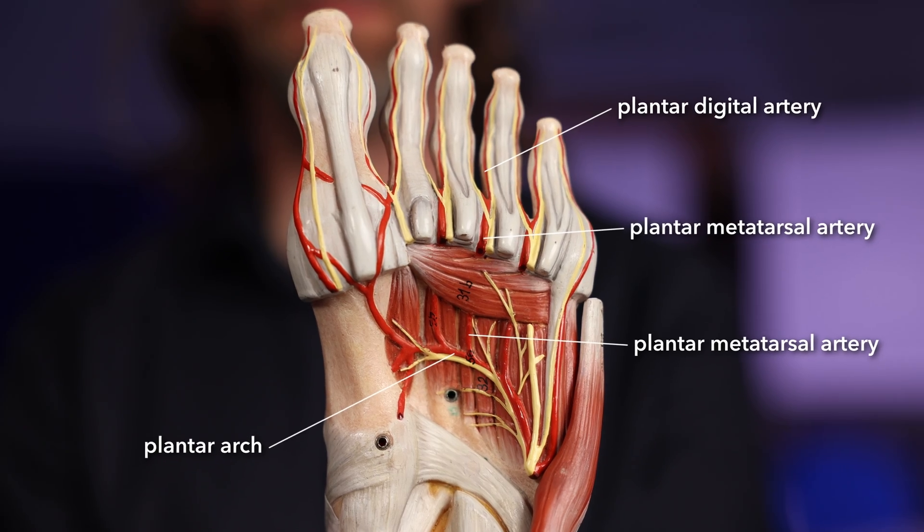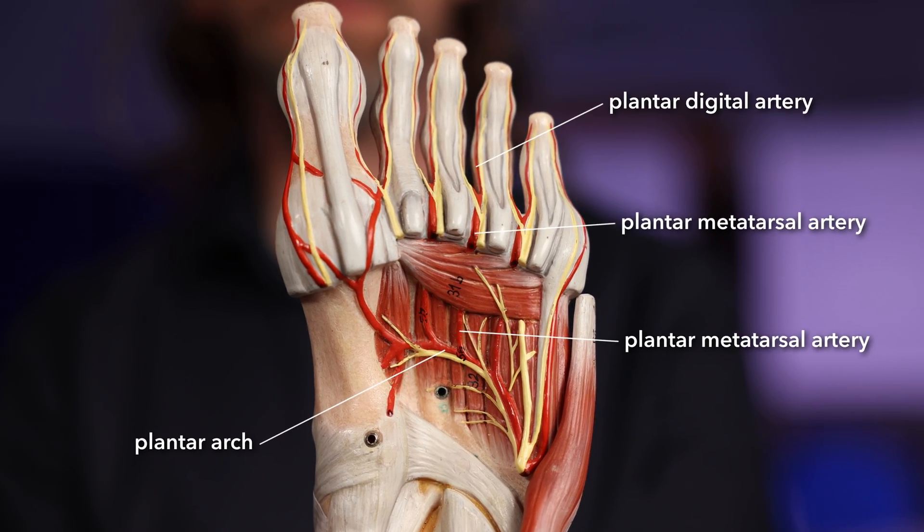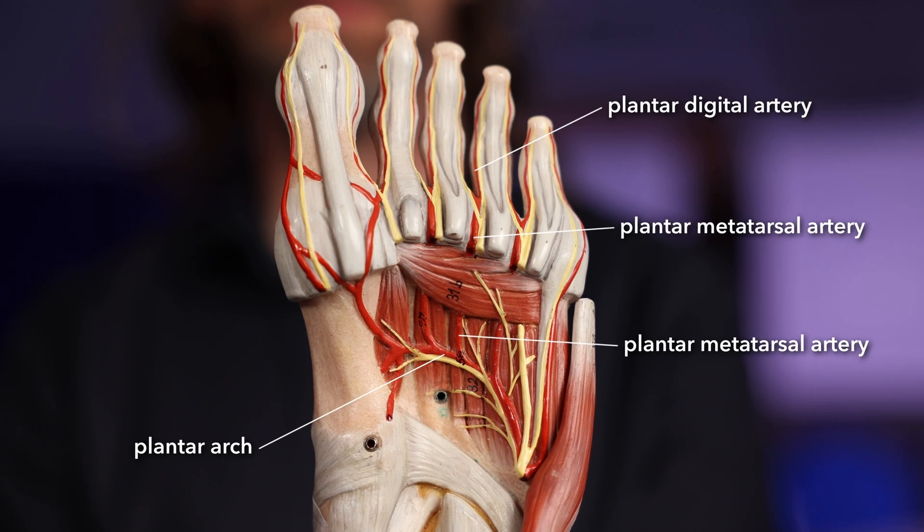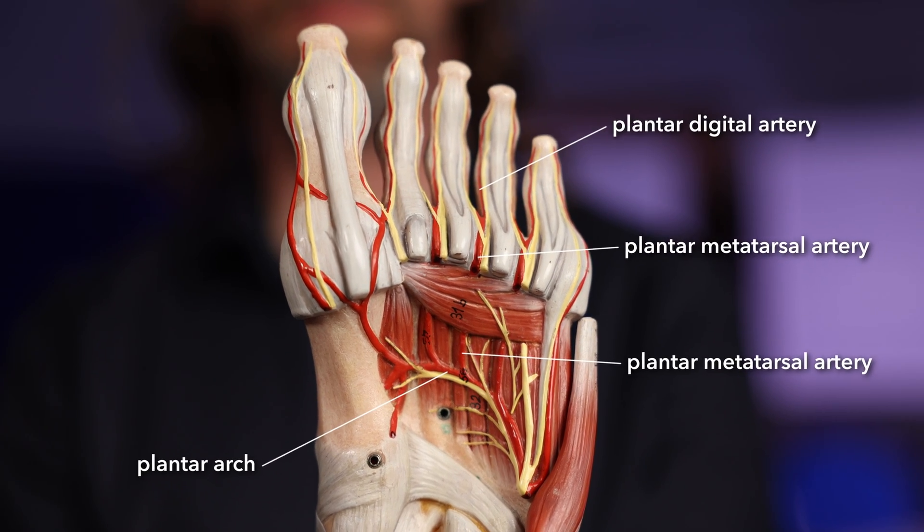And there is the plantar arch — it also gets called the deep plantar arch, but there is only one arch. It gets called the deep plantar arch because it's really deep. That deep plantar arch is curving around from lateral to medial, really close to the bone, deep to the other muscles. It's giving off metatarsal branches, and as those metatarsal branches run towards the digits they give off digital branches, and the digital arteries run up the side of each toe. So each toe has a digital branch on either side — these are the plantar metatarsal branches and the plantar digital branches.